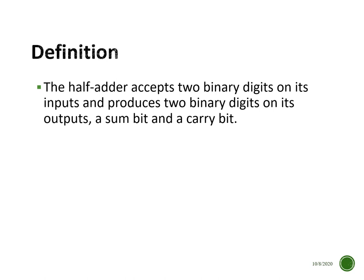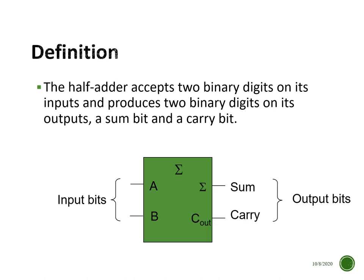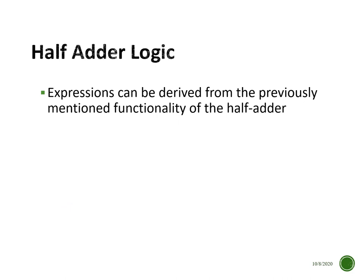The definition of a half adder is that it accepts two binary digits on its inputs and produces two binary digits on its outputs — a sum bit and a carry bit. This is the symbol we use for a half adder: it has two inputs A and B coming in, and it produces a sum output and a carry out.